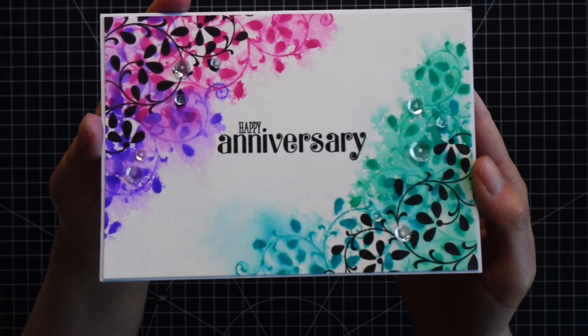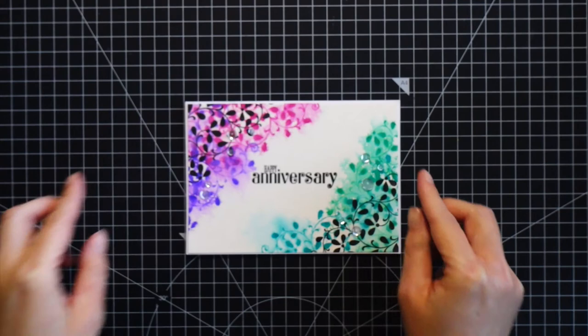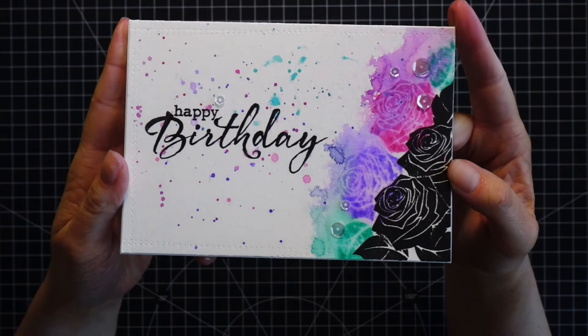You can use any other stamp set that has solid stamps. As I said at the beginning, I created this style of stamping with a different stamp set, and here it is. I used a stamp set from Altenew called Curved Rose, and I followed the same steps. First, I stamped it with the black ink and then with the Distress Inks, and then I sprayed it with water.